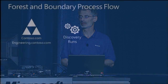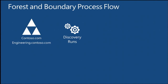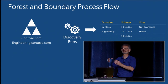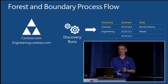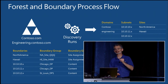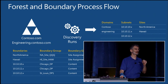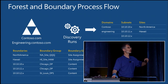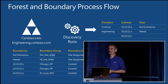In the forest and boundary process flow, running AD forest discovery on a forest like contoso.com discovers domains, subnets, and AD sites. We don't automatically do anything with that unless you tell us to create boundaries. You could create boundaries from those subnets and AD sites, then use them in boundary groups. Boundaries in ConfigMgr 2012 do nothing on their own — they're utilized when added to a boundary group. Boundary groups are a collection of multiple different boundaries used for some purpose, and you can still manually type boundaries if you prefer.